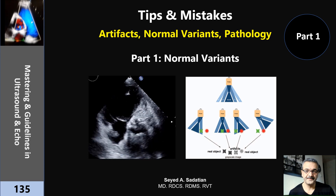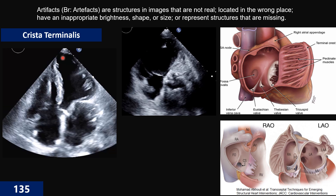Let's do it. The definition of artifacts are structures in images that are not real, or they are in the wrong places. Based on the principles of ultrasound, the machine shows them in the wrong place, or the echogenicity is not what it should be, or the shape or size of the image has changed, or some part of the image is missing. Those are the general different variant types of artifact.